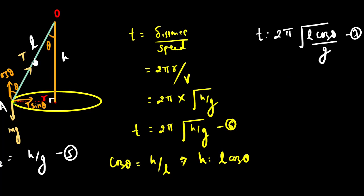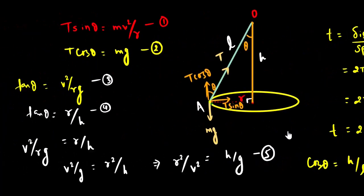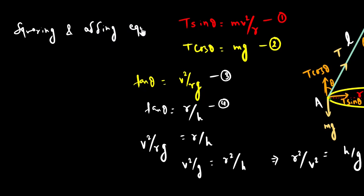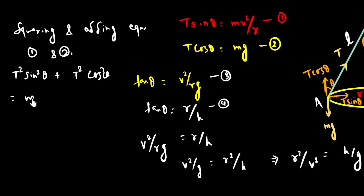Now we are going to find the tension in the string. To do this, we square and add equations 1 and 2. Squaring and adding: T squared sine squared theta plus T squared cos squared theta equals M squared v to the power 4 over r squared, plus M squared g squared. Using the trigonometric identity, T squared equals M squared times the quantity v to the power 4 over r squared plus g squared.